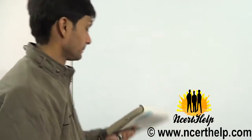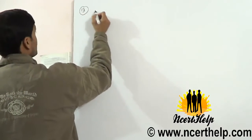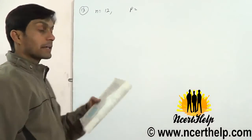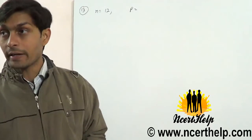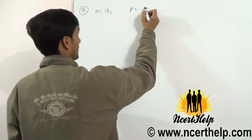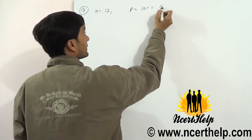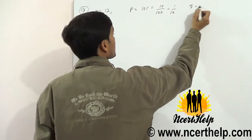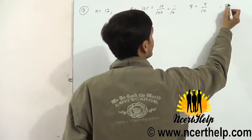N is 12. P is 10% divided by 100, which is 1 by 10. Q is 9 by 10. R is 9.